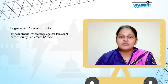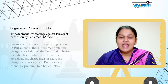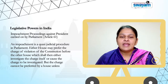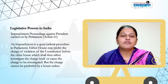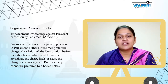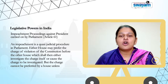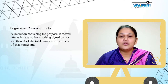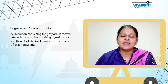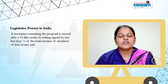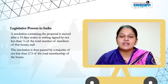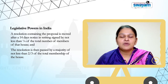Impeachment proceedings against the President are carried on by the Parliament. An impeachment is a quasi-judicial procedure in Parliament. Either House may prefer the charge of violation of the Constitution before the other House, which shall then either investigate the charge itself or cause the charge to be investigated. The charge cannot be preferred by a House unless a resolution containing the proposal is moved after a 14 days' notice in writing, signed by not less than one-fourth of the total number of members of that House, and the resolution is passed by a majority of not less than two-thirds of the total membership of the House.